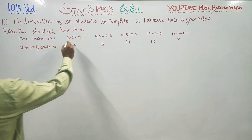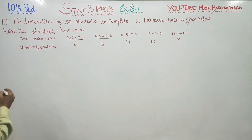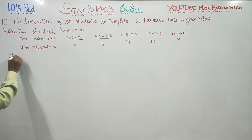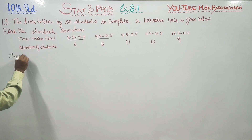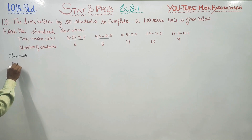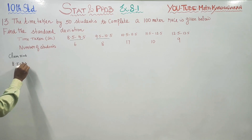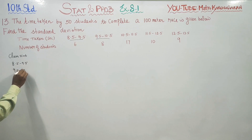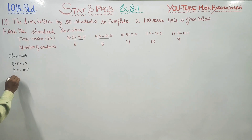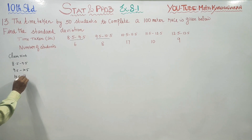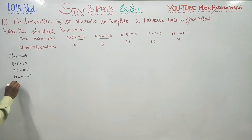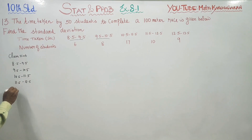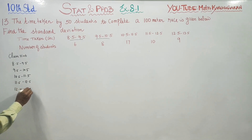About the time taken class intervals, we will start with our class intervals. Our class intervals are: 8.5 to 9.5, then 9.5 to 10.5, then 10.5 to 11.5, 11.5 to 12.5, and 12.5 to 13.5.